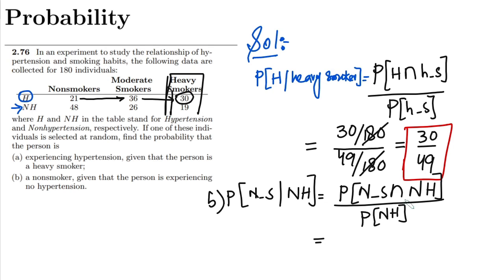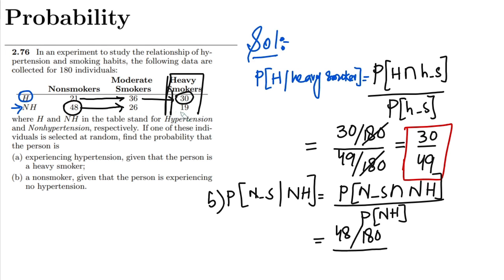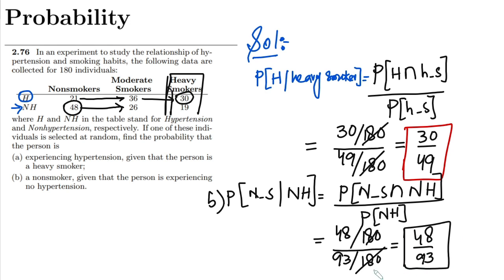The value for a person being a non-smoker with no hypertension is given as 48, so that is 48 divided by 180. The probability that a person is non-hypertensive is 48 plus 26 plus 19, which equals 93, divided by 180. The 180s cancel out, giving 48 divided by 93 — that is the answer to part B. That's it for today, see you soon with more interesting problems.